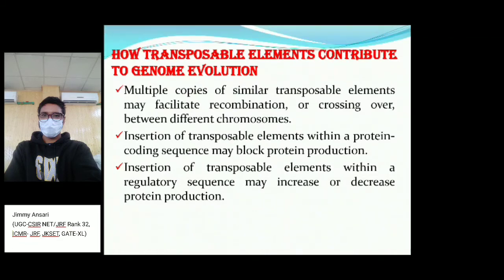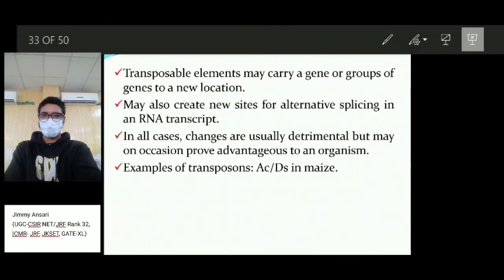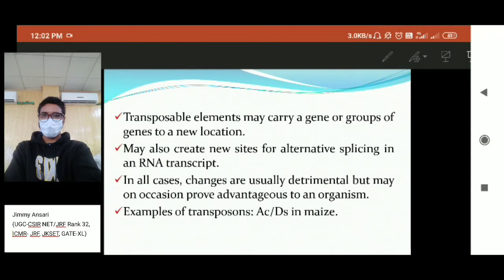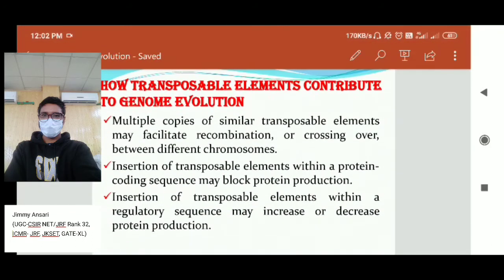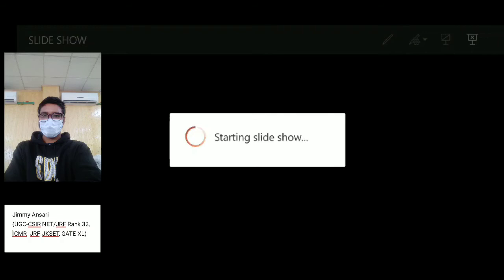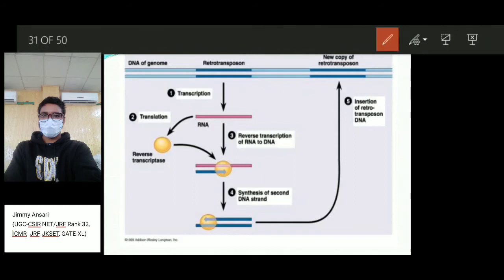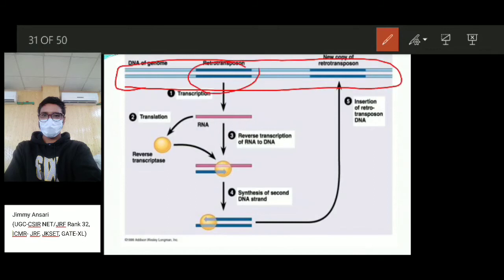Now, how do transposable elements contribute to genome evolution? Here is a slide showing the retrotransposition mechanism. This is the genome of a cell and this is the retrotransposon. In step one, when a transposon is present, it is first transcribed into RNA or mRNA — this is the transcription step. Through translation, it produces a protein, which is actually an enzyme.